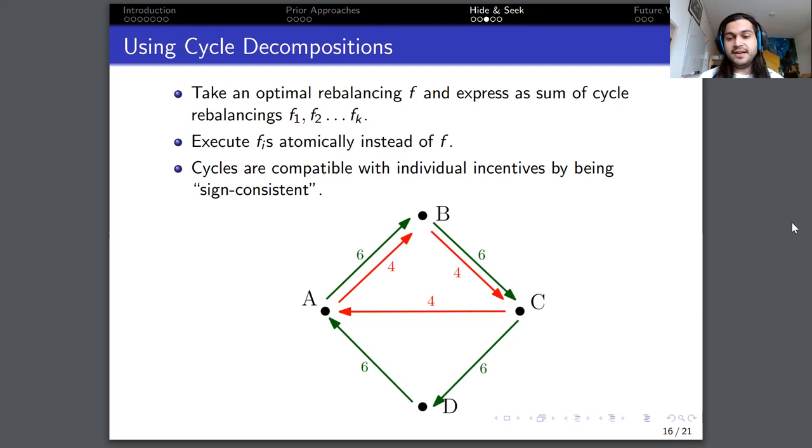The other benefit of taking a cycle decomposition is that certain users who want to slow down the protocol or who want to just affect everyone else's rebalancing have less power. So if you were to execute the entire rebalancing atomically, a single user, let's say D could veto the whole process and prevent any rebalancing to occur. But if we have a cycle decomposition, then D can only prevent the execution of cycles that go through D. So D can prevent the green cycle from executing, but not the red one. And that increases our robustness against certain, let's not say malicious, but trolling parties.